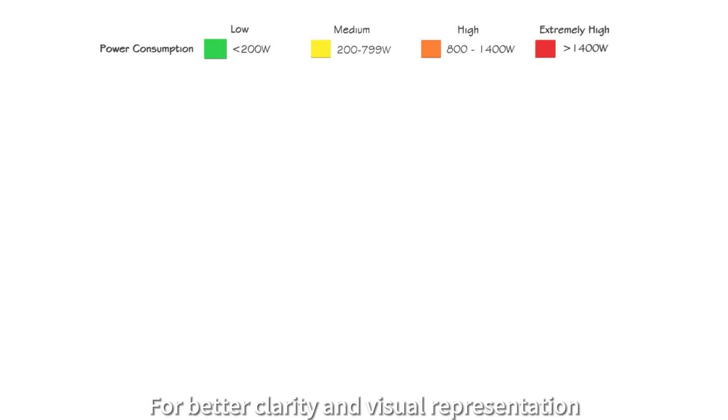For better clarity and visual representation, each appliance has been color coded from green indicating low power consumption to red indicating extremely high power consumption.